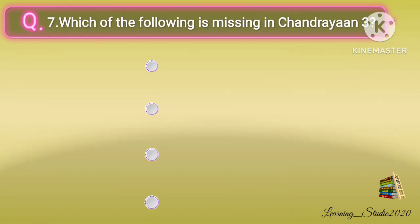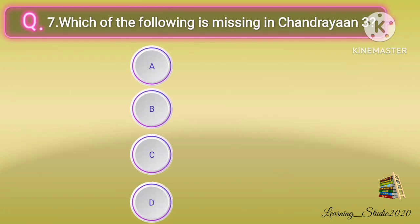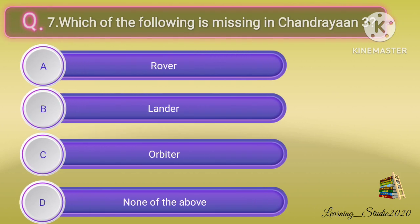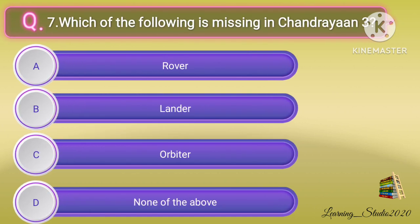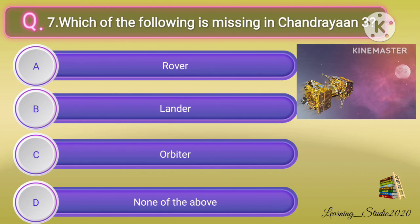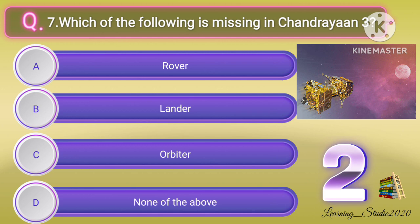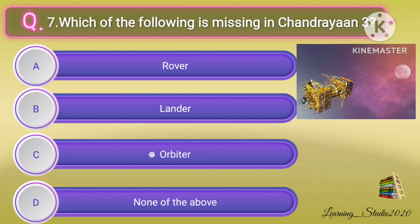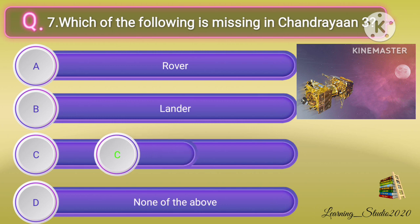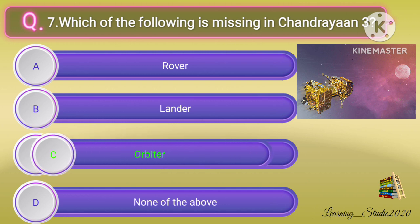Which of the following is missing in Chandrayaan 3? Correct answer: option C, Orbiter.